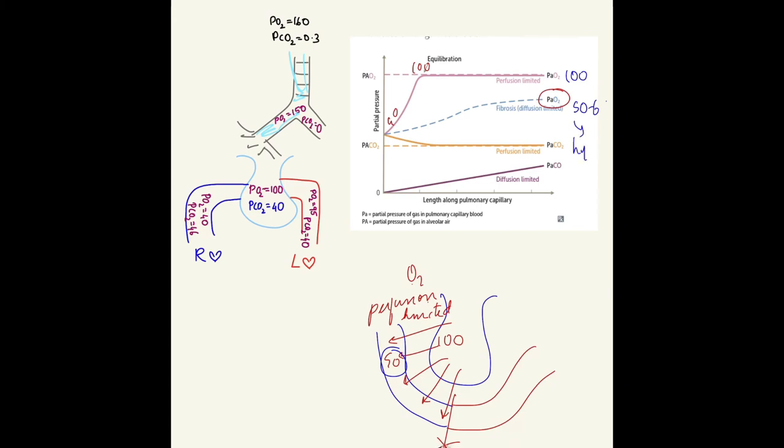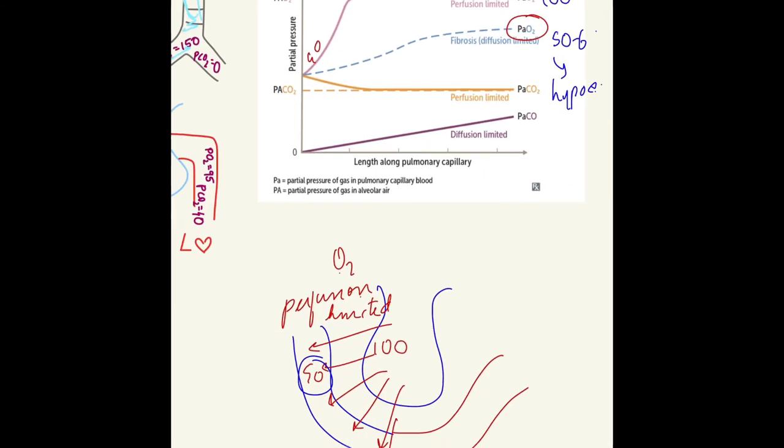Next, diffusion limited is seen in carbon monoxide poisoning. When we inhale carbon monoxide fumes, the partial pressure of carbon monoxide increases. But when it enters the capillaries, it binds with hemoglobin forming carboxyhemoglobin.